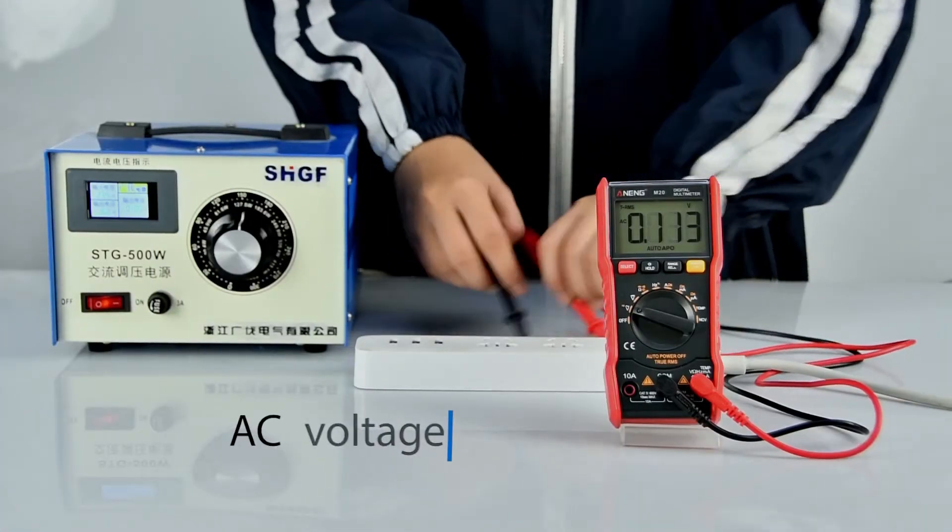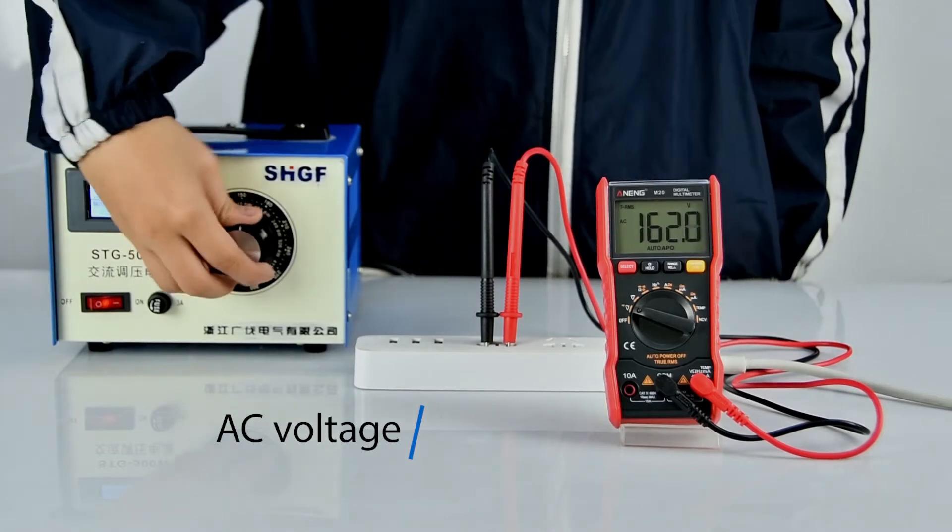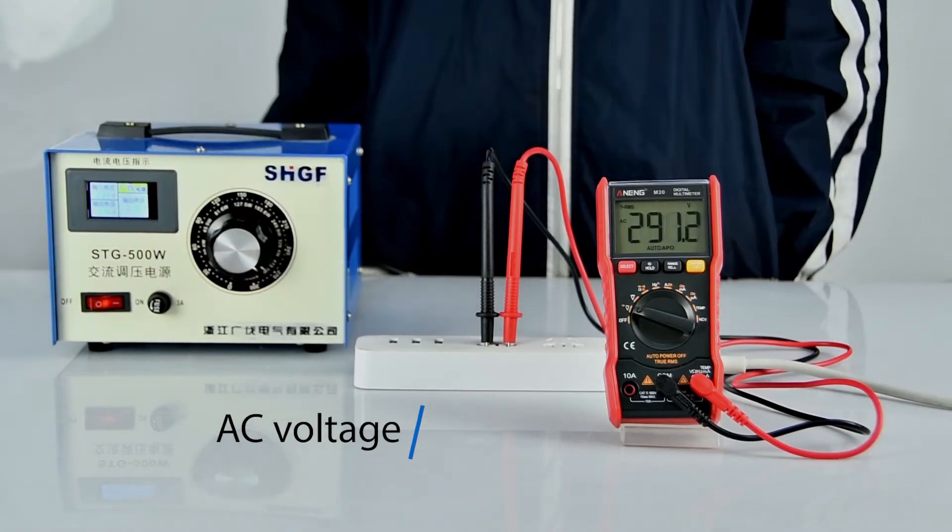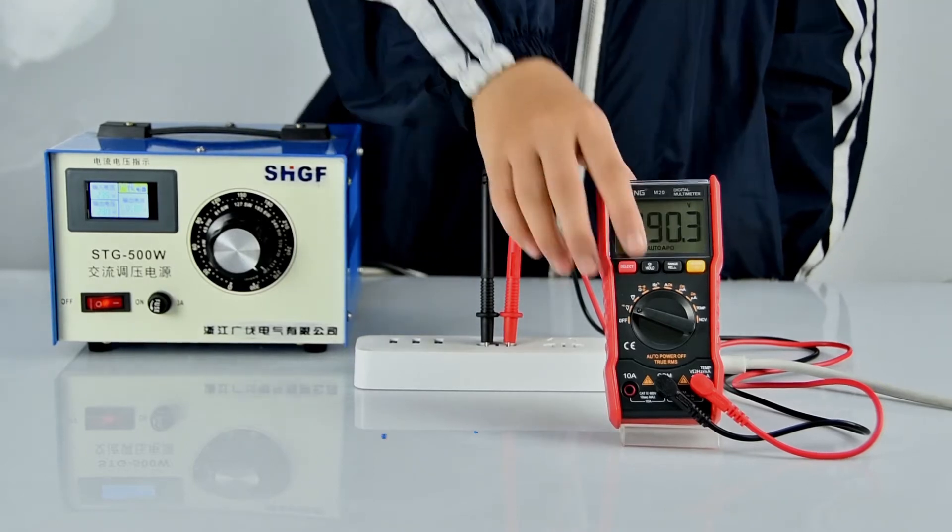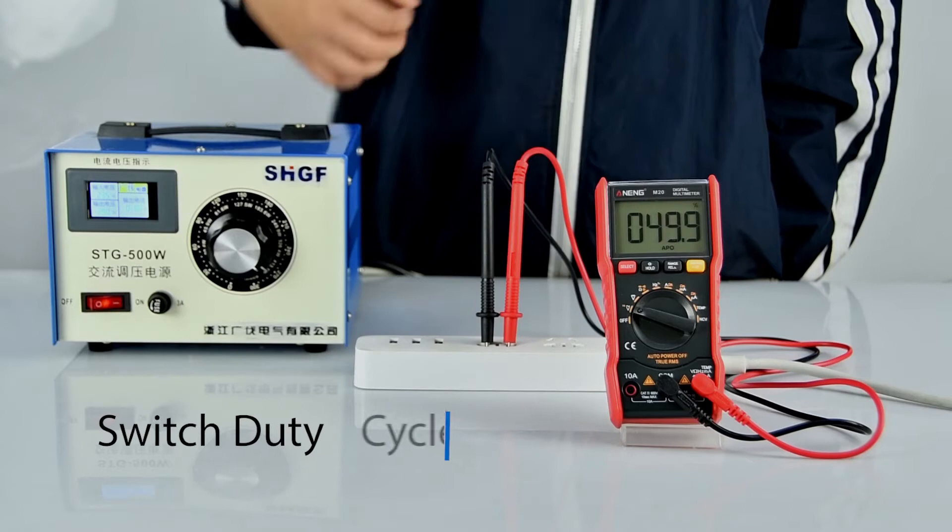AC voltage measurement using transformer must be used in series when measuring, not directly.